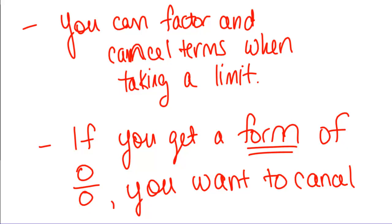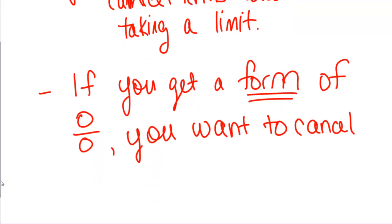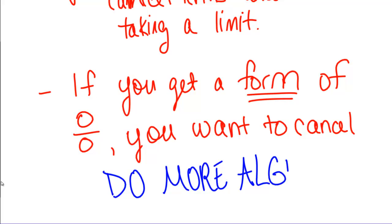So depending on the difficulty of the problem, it may be harder than just factoring something out and canceling it. There may be more algebra involved, but you always can find some way of canceling if you're getting 0 over 0, so the moral here is we want to do more algebra. And as we continue on the lesson, we'll see some of the more difficult types of algebra that you might have to do.